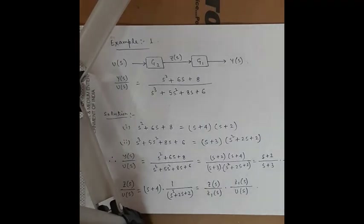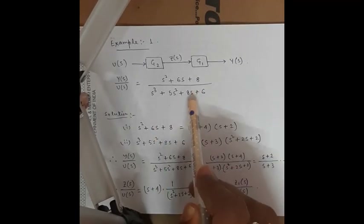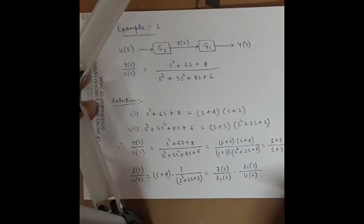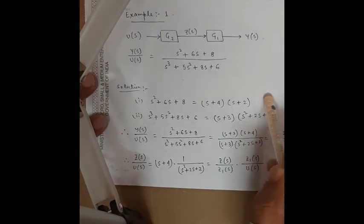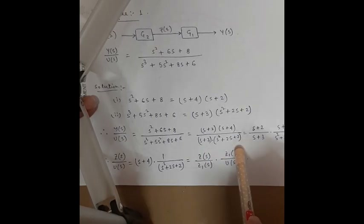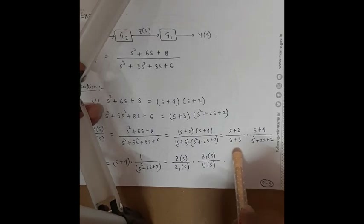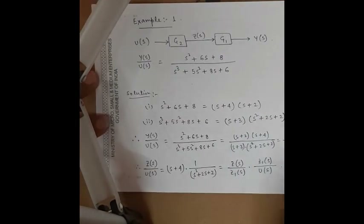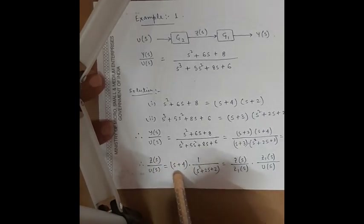Considering an example, the overall transfer function is (s² + 6s + 8) / (s³ + 5s² + 8s + 6). We first take the factorization of the numerator and denominator. The numerator s² + 6s + 8 factorizes as (s + 4)(s + 2), and the denominator factorizes as (s + 3)(s² + 2s + 2). So we can write Y(s)/U(s) = (s + 2)(s + 4) / [(s + 3)(s² + 2s + 2)].